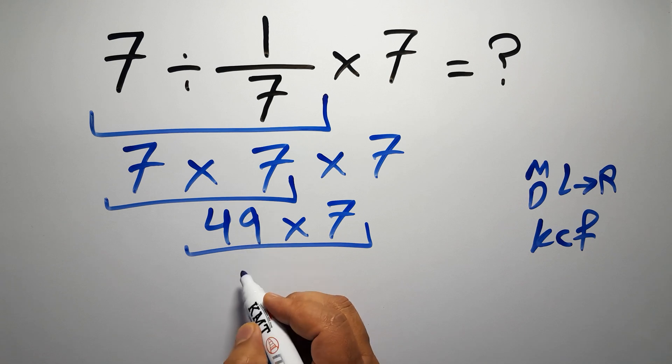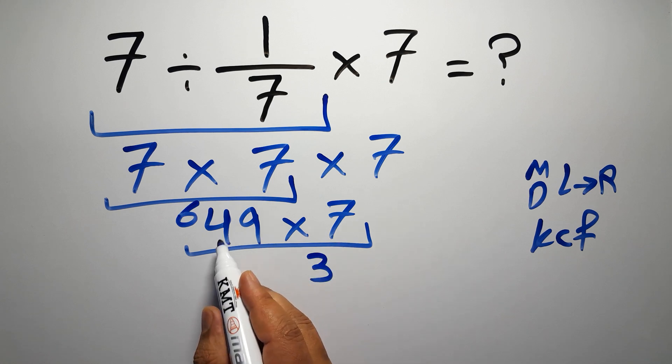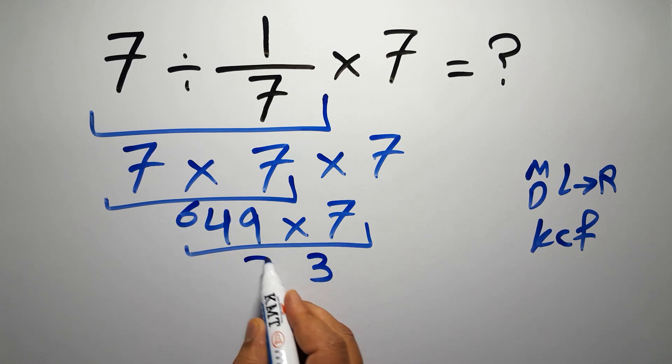7 times 9 gives us 63. We write 3 here and carry 6 here. 7 times 4 equals 28, and 28 plus 6 gives us 34.